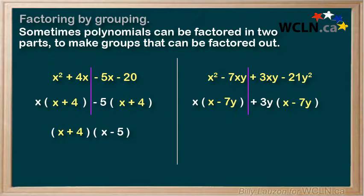We will now notice that we have common factors, x minus 7y on both sides. So we can factor that out. We put that in front, and that leaves us with an x plus 3y as our second factor. And we have now factored this by grouping.